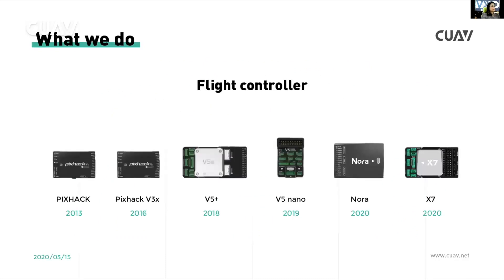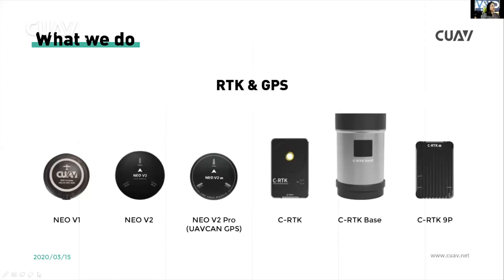Let's see what we do. We make nine flight controllers. The main flight controllers are the V5 Plus, V5 Nano, and the X7. We also have the Nola. Today we focus on the new flight controllers — the Nola and S7.